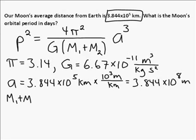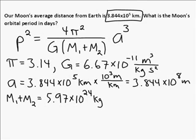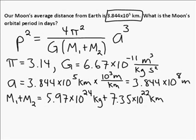So, M1 plus M2. We'll let M1 be the Earth. Although, like I said, it doesn't matter which one is 1 and 2. So that's 5.97 times 10 to the 24 kilograms. And then M2 is going to be the moon then. 7.35 times 10 to the 22 kilograms.